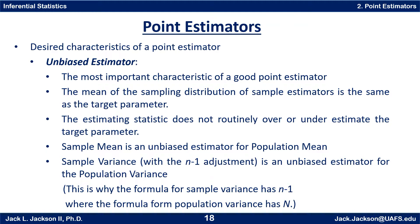The most important characteristic of a good point estimator is that it is unbiased. This means that the mean of the sampling distribution of the sample estimator is the same as the target parameter. For example, we know that the mean of the sample means is the same as the mean of the individuals — that means it's unbiased. This way the estimating statistic does not routinely over- or underestimate the target parameter.